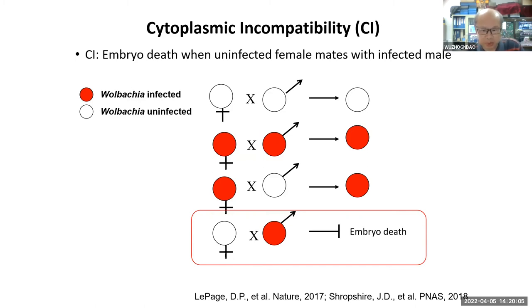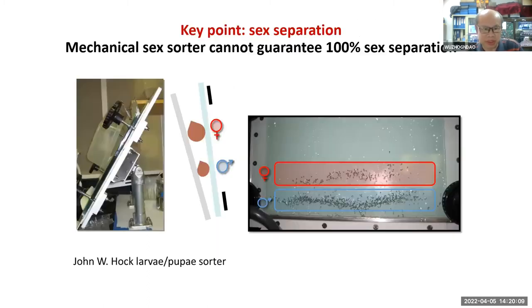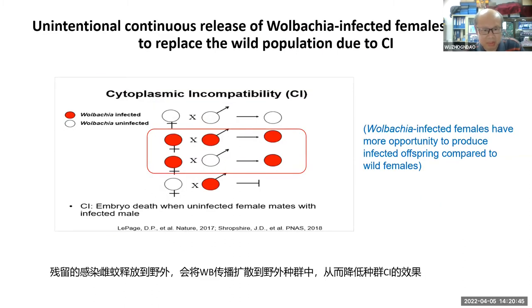We are working on a new way to control insects, specifically mosquitoes. A key challenge with the IIT approach is sex separation — ensuring that infected females do not survive in the treated population. If infected females survive, they can bring Wolbachia into the wild population, enlarging it and reducing the effectiveness of Wolbachia-induced CI.